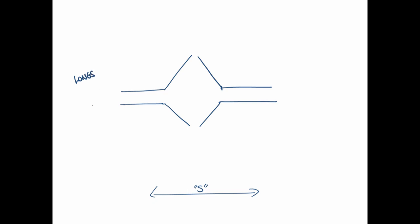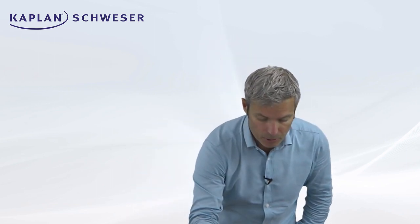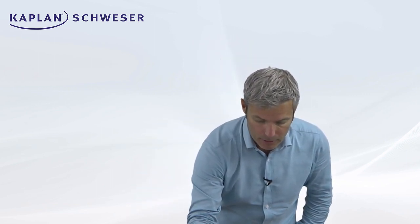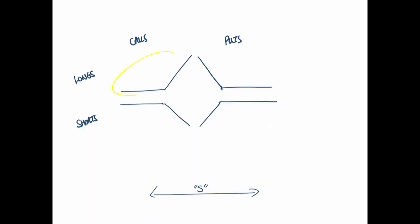You've got your longs on top, shorts on the bottom, calls alphabetically on the left and then puts. Those are your four option payoffs. It's very important to have access to these when thinking about option strategies. This is our first option strategy: we've gone long a call, so we have that payoff from being long a call — we win as the underlying goes above the strike. But we've also sold a put. There's a short put position.